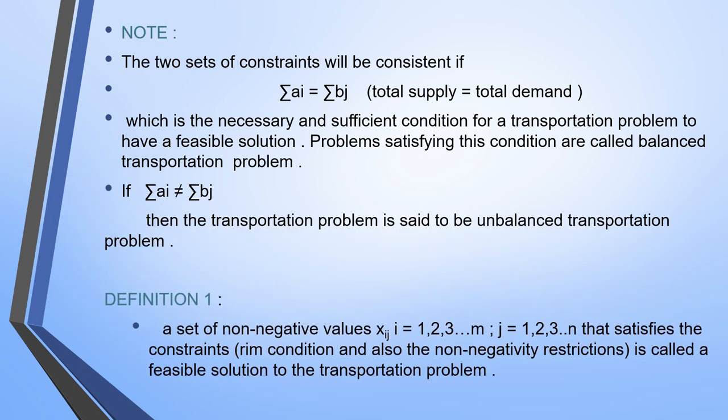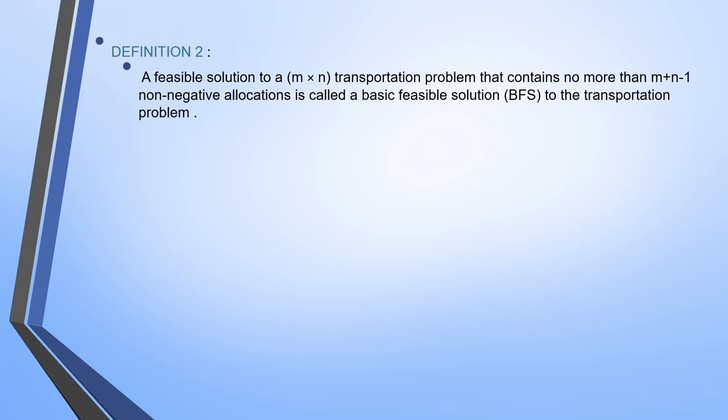Definition 1: A set of non-negative values Xij, where i = 1, 2, 3, ..., m and j = 1, 2, 3, ..., n, that satisfy the constraints is called a feasible solution to the transportation problem. Definition 2: A feasible solution that contains no more than m plus n minus 1 non-negative allocations is called a basic feasible solution, where m specifies the number of rows and n specifies the number of columns.